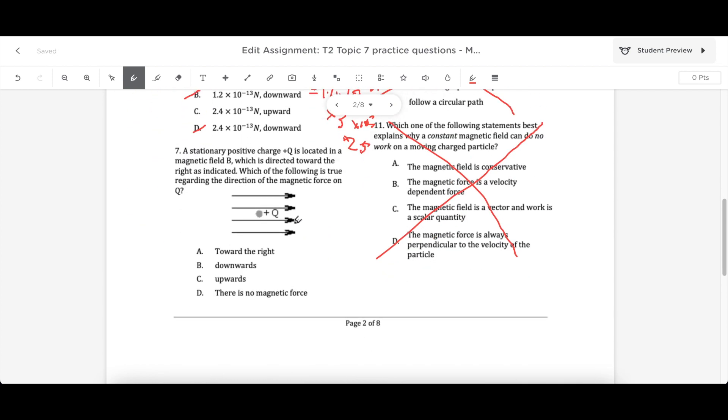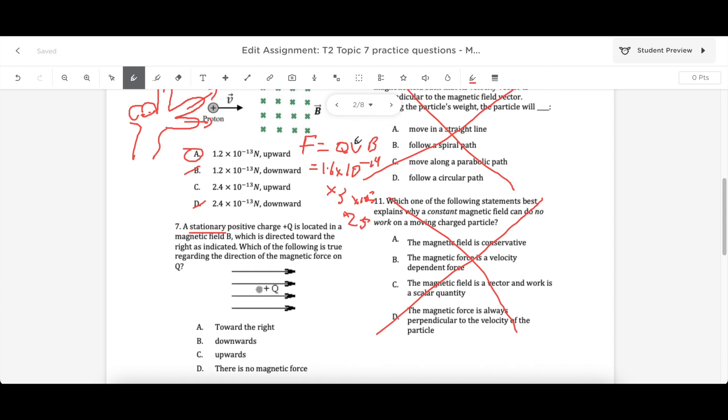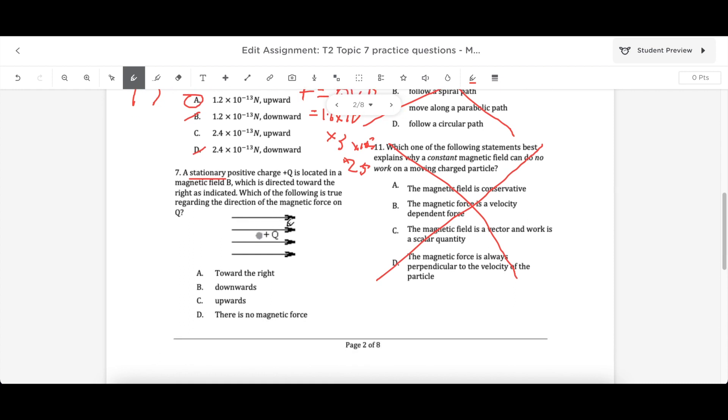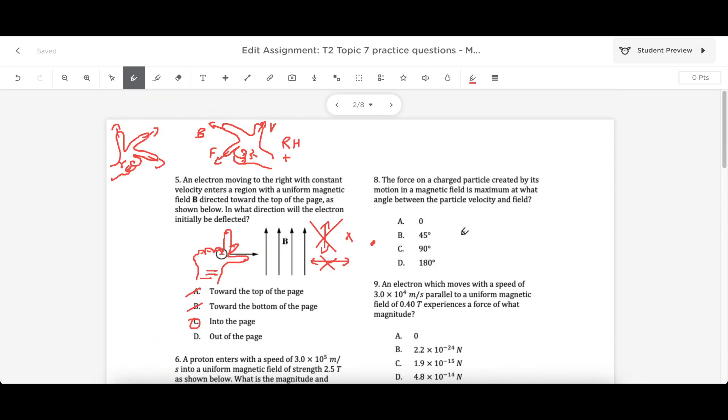So looking at this one here, a stationary positive charge is located here at this magnetic field. Now look at that. Stationary. It is not moving. A charge has to be moving through the field. I must have a charge, a speed and a field. I have a charge and a field, but no movement, no speed. There is no force. No need to calculate anything over here.